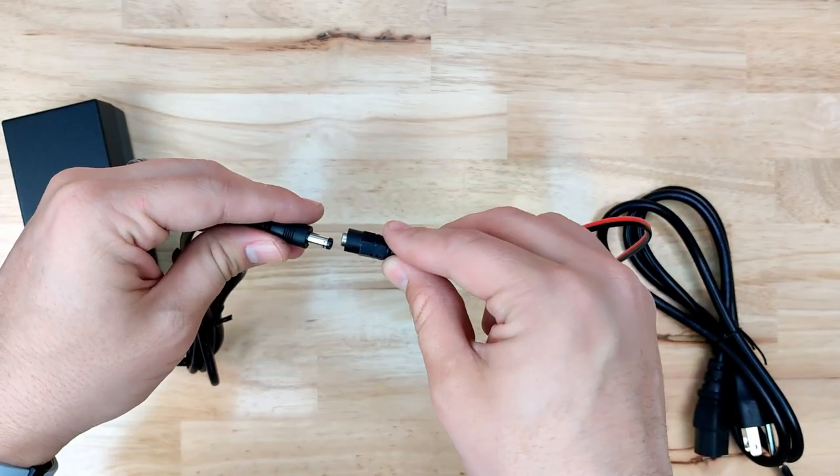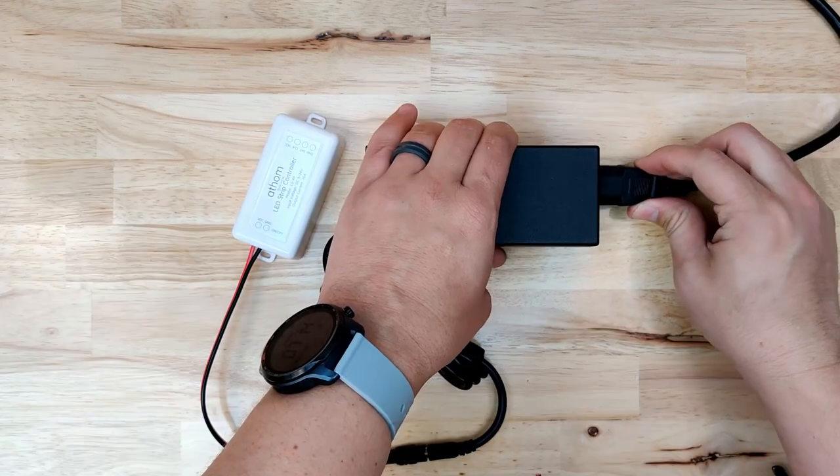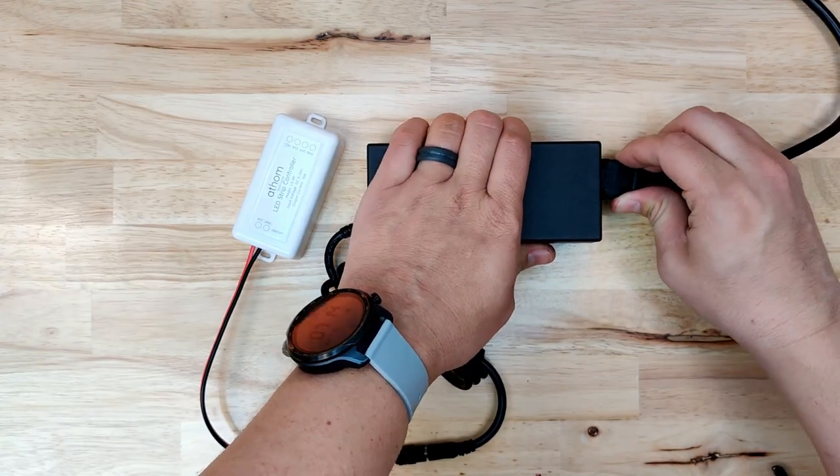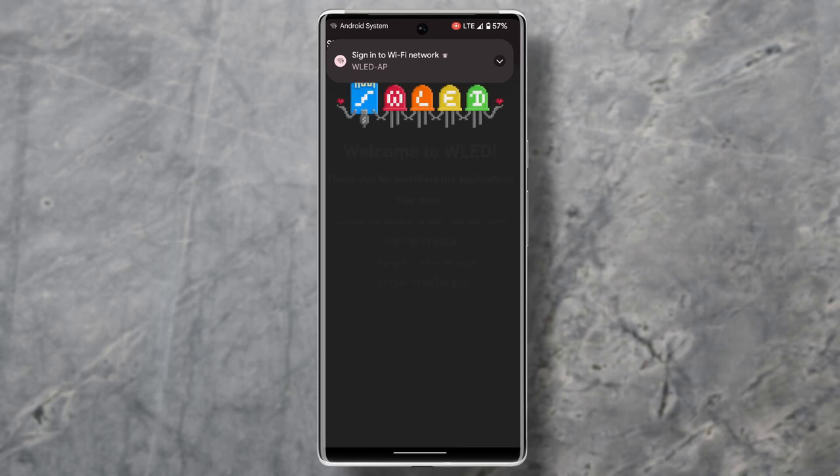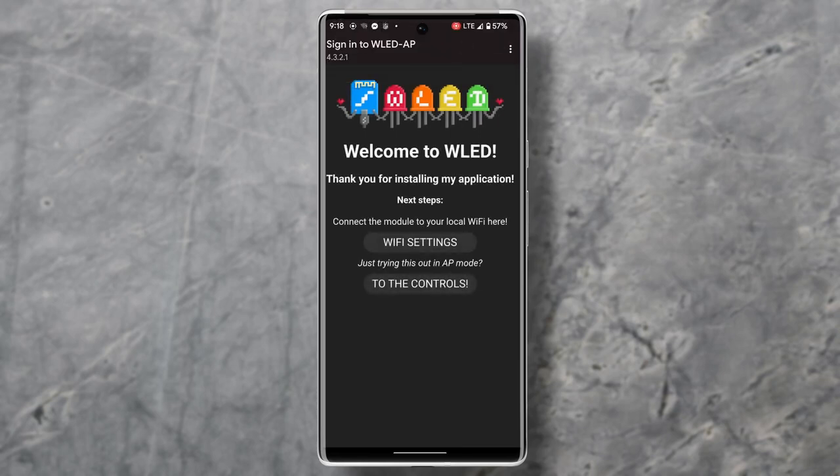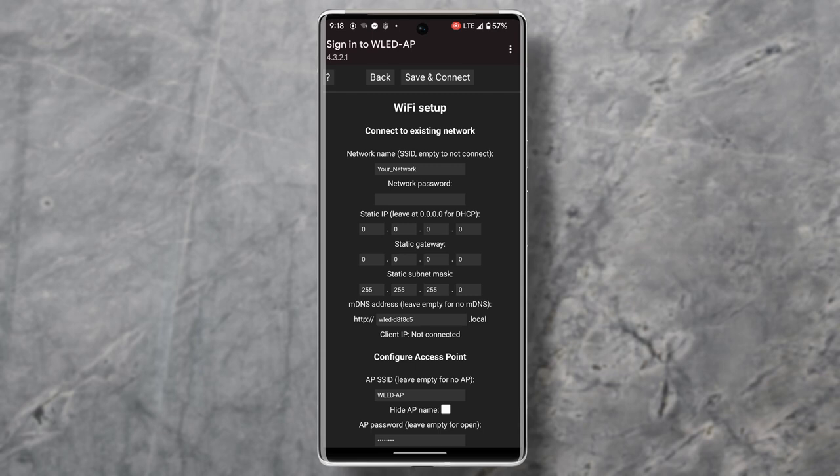Next connect the power supply to the DC adapter and it'll power up your controller and then you can go ahead and look on your phone or on your PC for a Wi-Fi access point that has WLED in the name. Connect to that access point and type in 1234 for the password if it asks you for one.